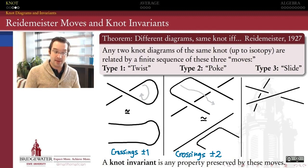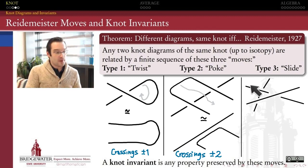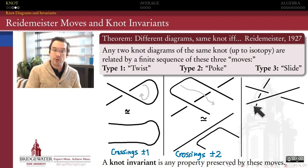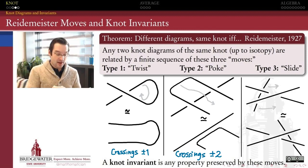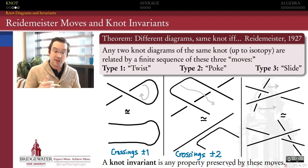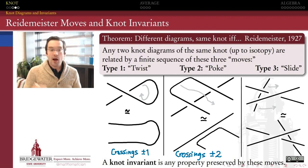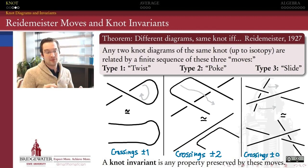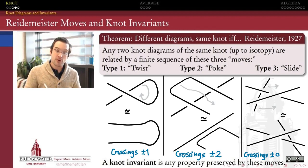Finally, the type 3 Reidemeister move is called the slide, and it involves three crossings. We arrange the strands so that one crossing has another strand passing underneath both arcs involved in that crossing, and the slide just takes that underneath strand and moves it from one side of the crossing to the other. Unlike the other two moves, the type 3 move doesn't change the number of crossings in a knot diagram at all — but it is clearly an isotopy move, so it must be part of our Reidemeister move universe.